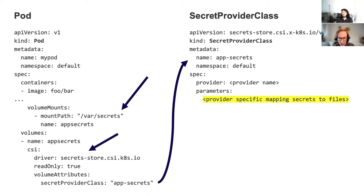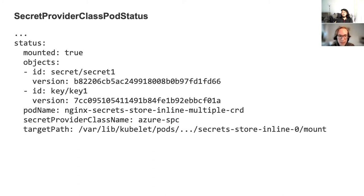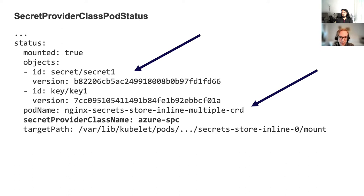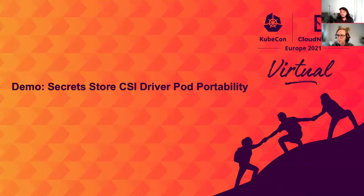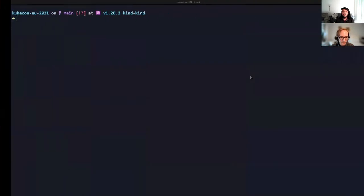We've looked at the pod YAML and the secret provider class YAML, but how do you know which versions of secrets are being used by your pod? The secret provider class pod status is a namespaced Kubernetes custom resource that is created by the CSI driver to track the binding between a pod and a secret provider class. This resource contains details about the current object versions that have been loaded into the pod mount.